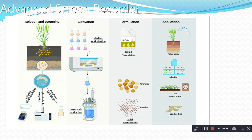Here the process is given. First is isolation and screening method. In this, we have many types: molecular identification, acetylene reduction, and phosphorus solubilization. Then we go to cultivation — using media, we do mass production, i.e. large-scale production. By formulation, liquid formulation is taken first, and then granules and powder as solid formulation. Application to the field includes foliar spray, irrigation, seed treatment, or soil amendments — we can mix the bio-inoculants with the soil or use seed coating. These are the four types of application.